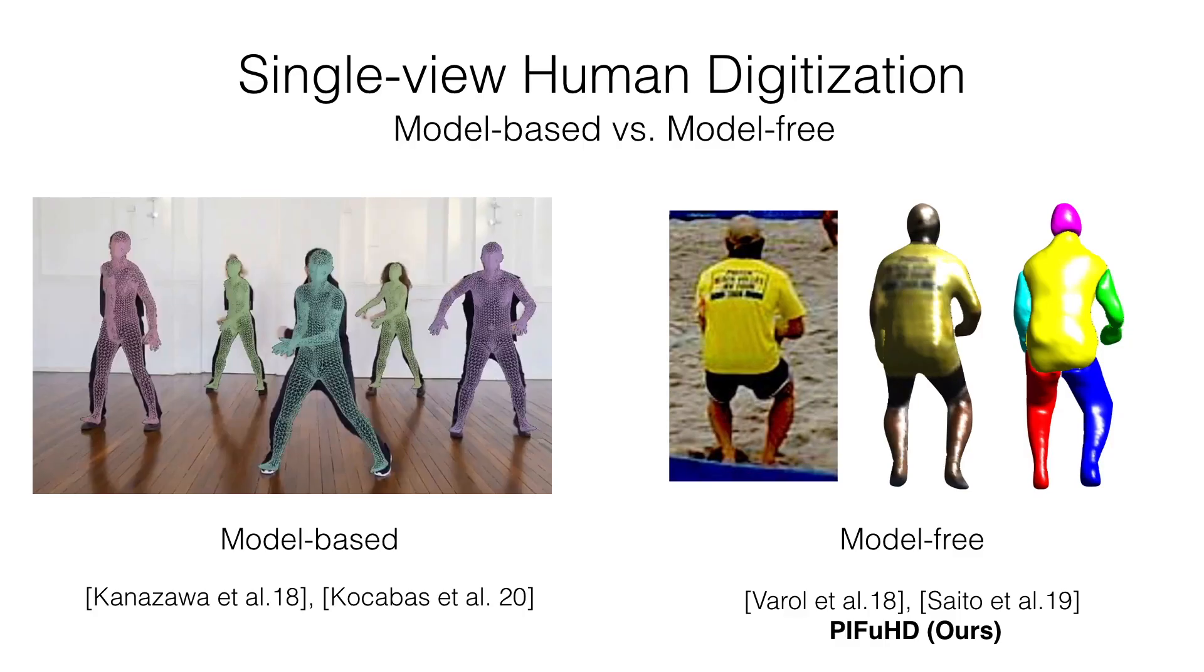Many human reconstruction methods rely on a parametric model for regression. However, the prediction is typically a naked body and all the personal details such as hairstyles and clothing are ignored.